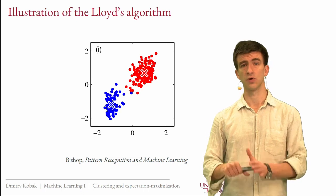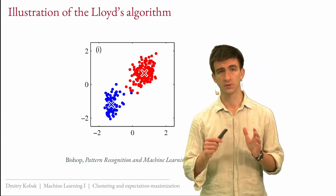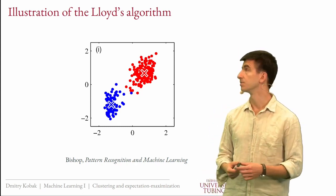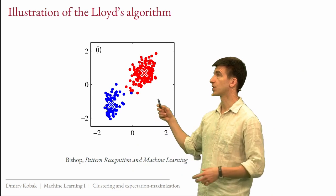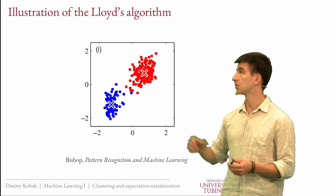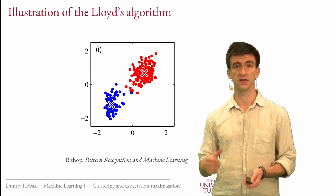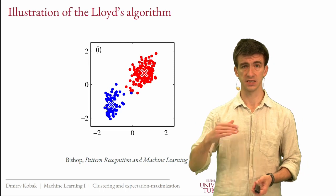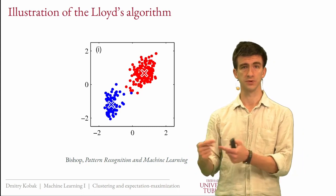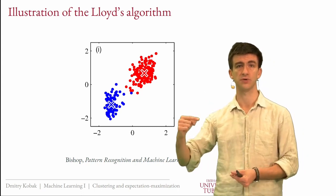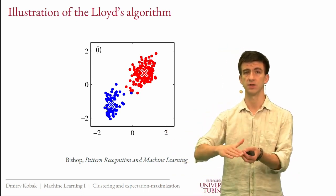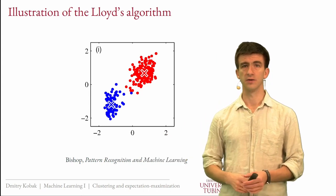Once every point is already assigned to the closest cross and each cross is at the average position of its points, nothing changes on further iteration — the Lloyd's algorithm has converged. It will always converge because there are a finite number of ways to split points into clusters, and each step of Lloyd's algorithm decreases or leaves unchanged the loss function. The loss never goes up, so at some point it must stop changing.